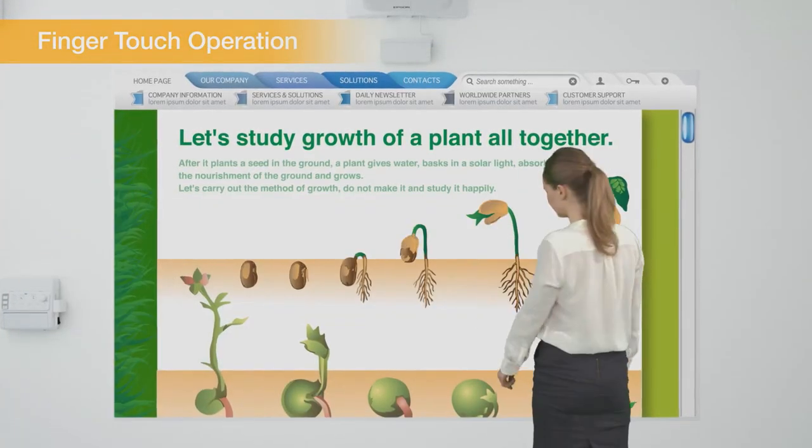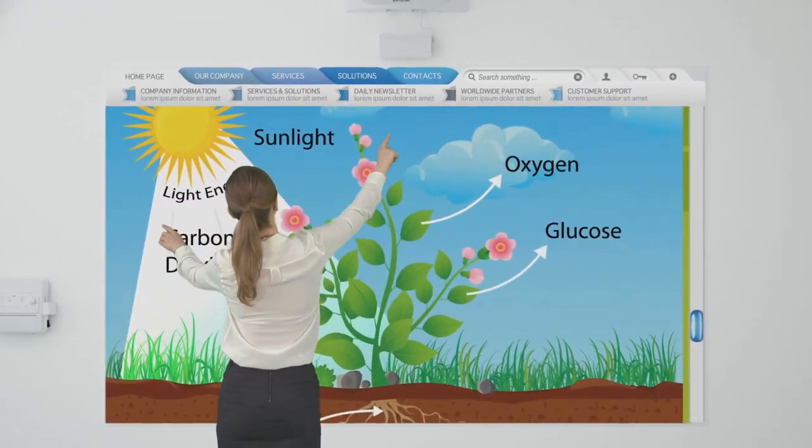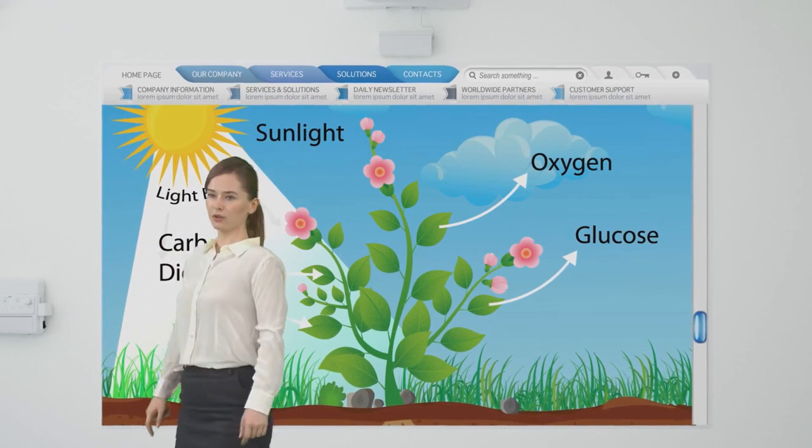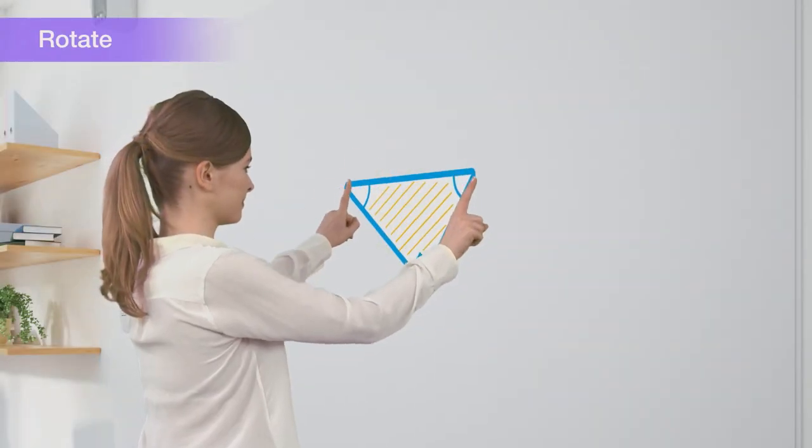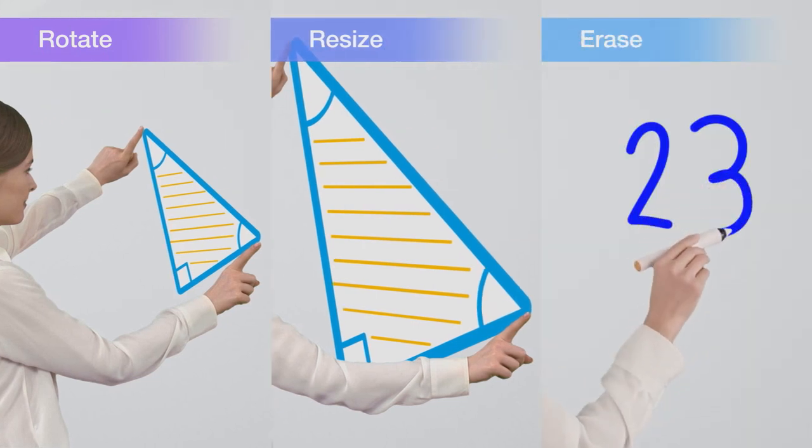Epson's innovative touch-enabled interactive function allows you to easily scroll through websites and zoom in on images. You also have the ability to rotate and resize images, and you can even use your finger as an eraser.